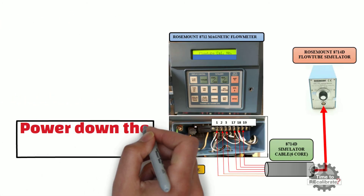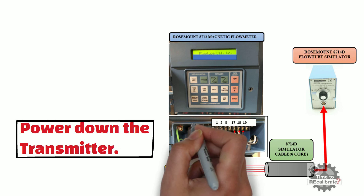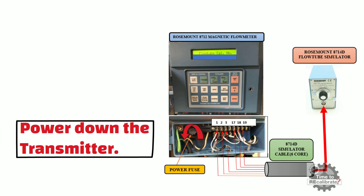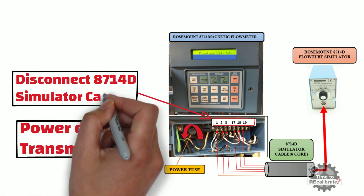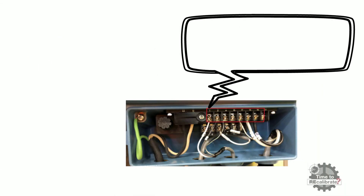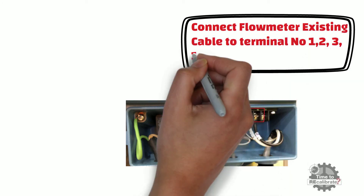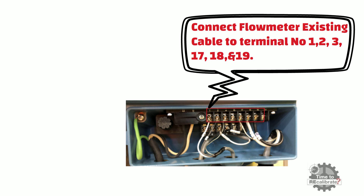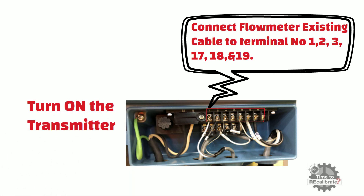Step 10: Power down the transmitter by rotating the power fuse in the counterclockwise direction. Step 11: Disconnect the 8714D simulator cable from the transmitter. Step 12: Connect the flowmeter's existing cable to terminal numbers 1, 2, 3, 17, 18, and 19. Once the connection is done, turn on the transmitter by rotating the power fuse in the clockwise direction.